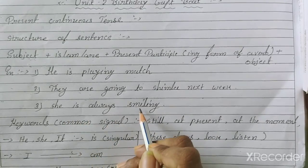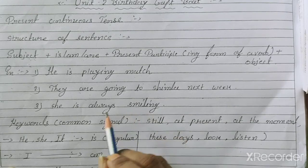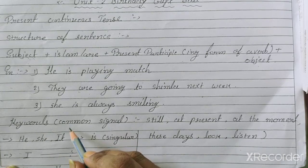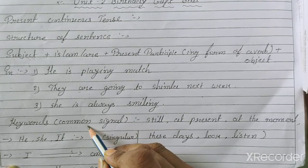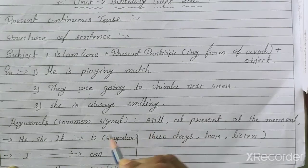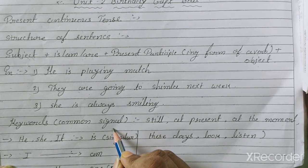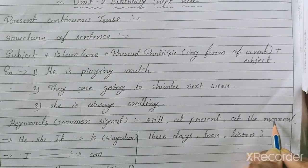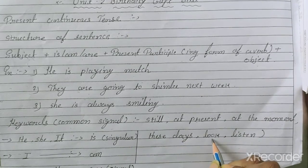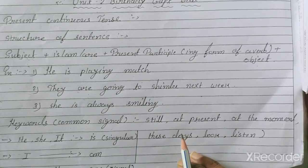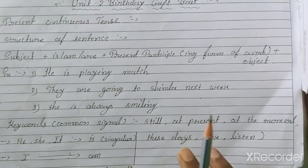She is always smiling. Now here are some keywords. Keywords are words that give identification that a sentence is in present continuous tense. These signal words are: still, at present, at the moment, these days, look, and listen. These are the identification words of our present continuous tense.